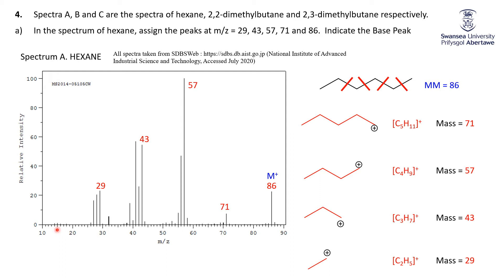Despite what a lot of the A-level questions would give you, these numbers — 29, 43, 57, 71 — are really important numbers for you to be able to recognize. They're not exclusively hydrocarbon fragments. For example, if you have a CHO fragment, that also weighs 29. But it's very helpful to recognize: if I've got a 57, it could well be a C4H9 fragment; if I've got 43, it could well be a C3H7 fragment. And I'll be casting back to that idea several times as we go through these questions.